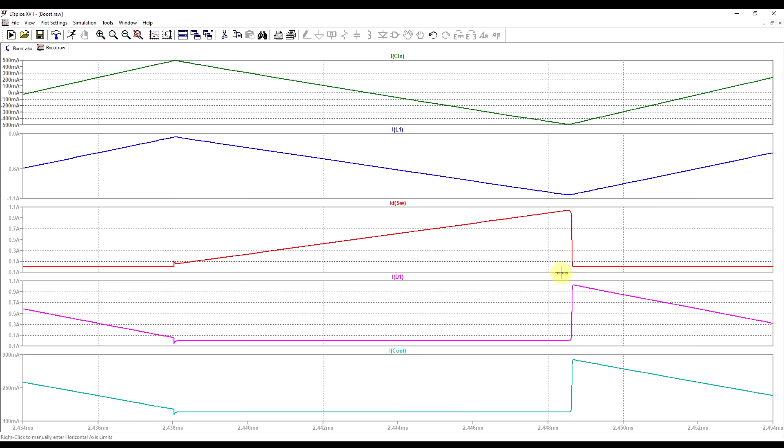When the switch is on, current is passing through it. When the switch is off, there's no current passing through it. And we get these nice sharp current transitions.